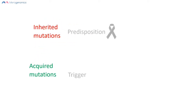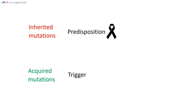In summary, it is the inherited mutations obtained from your mom and dad that provide cancer predisposition. However, it is the acquired mutations that eventually will trigger cancer development. Now let's take a look at what DNA actually is — the source of these mutations.